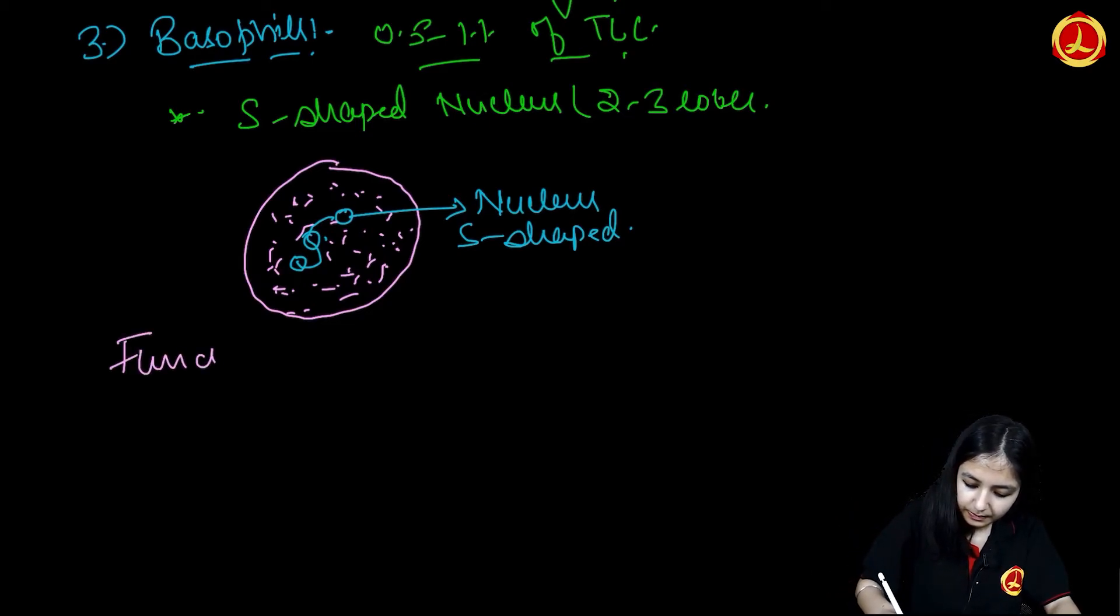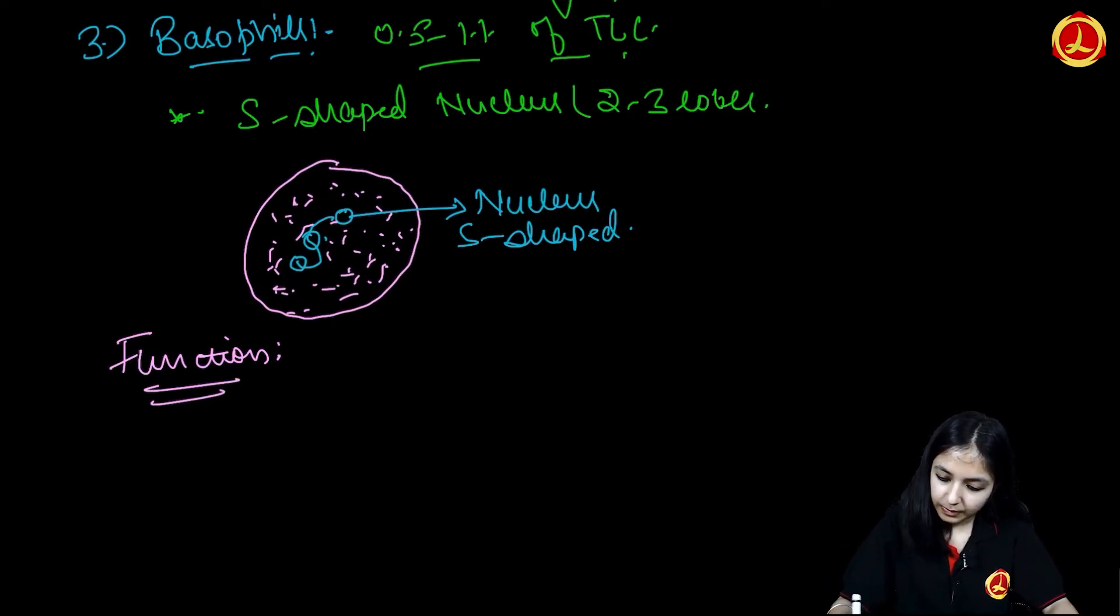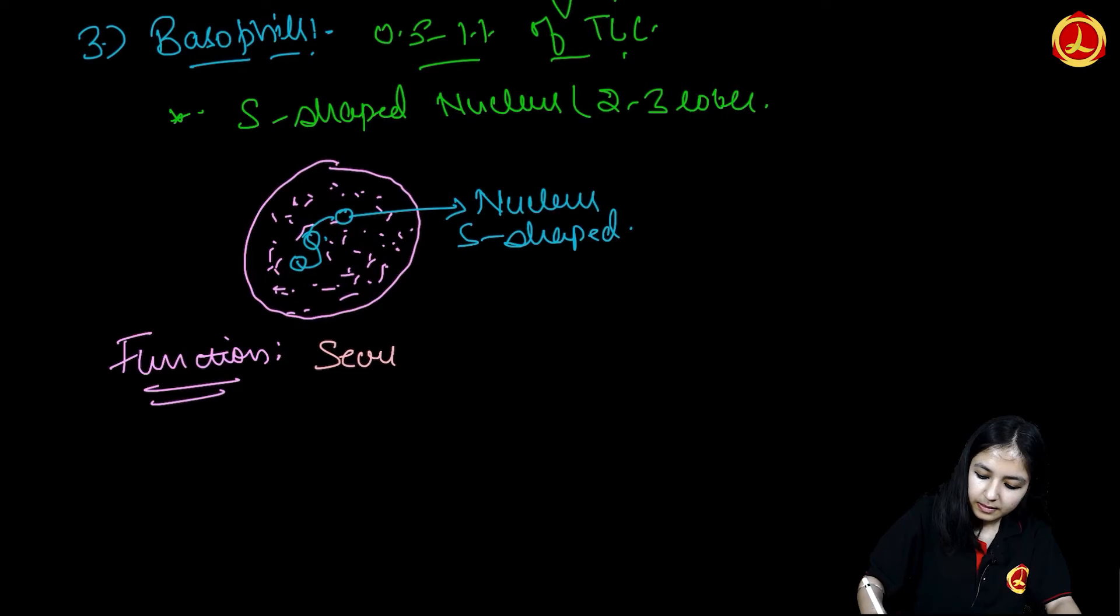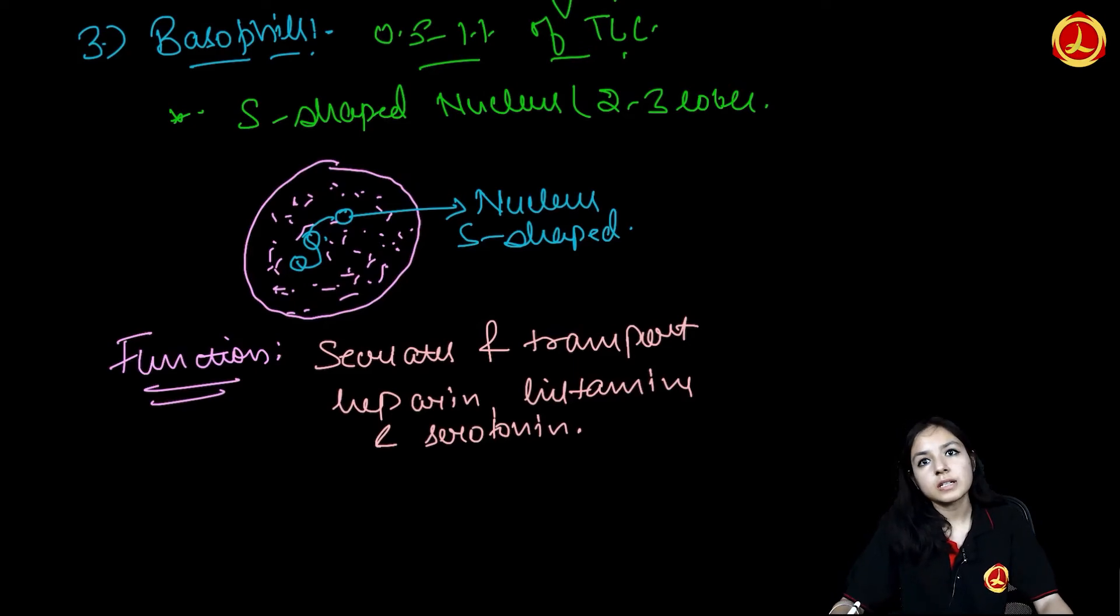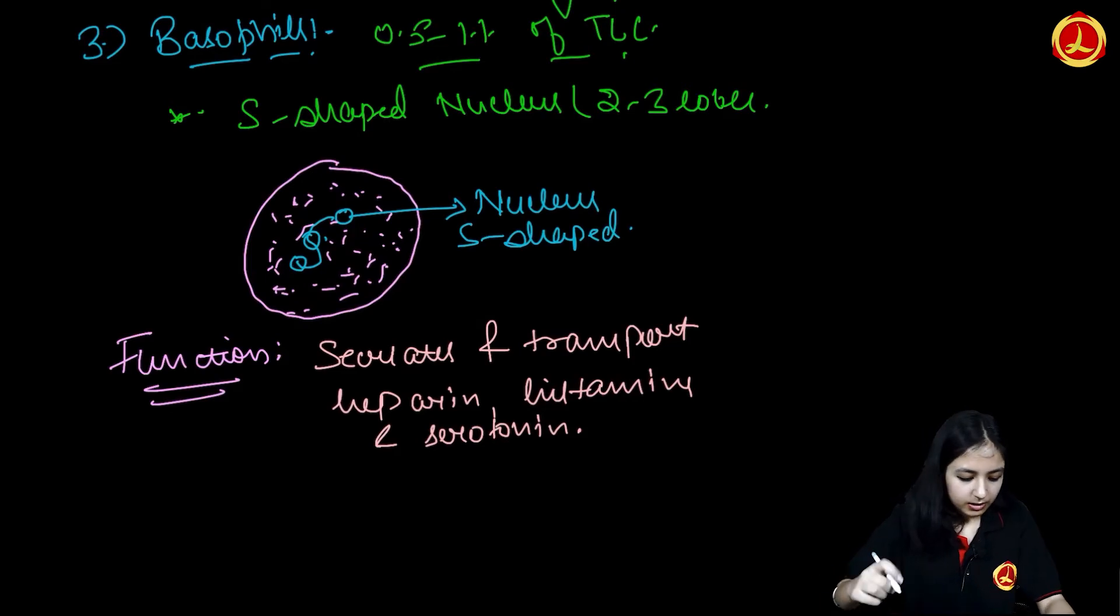What is its function? It secretes and transports heparin, histamine and serotonin. Basically basophils facilitate the release of mast cells. Basophils secretes and transport the heparin, histamine and serotonin.